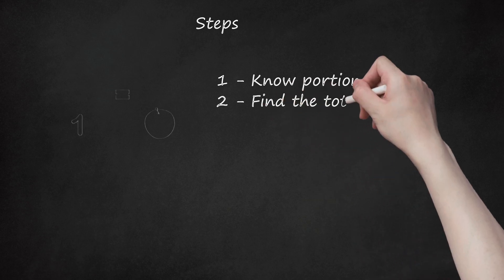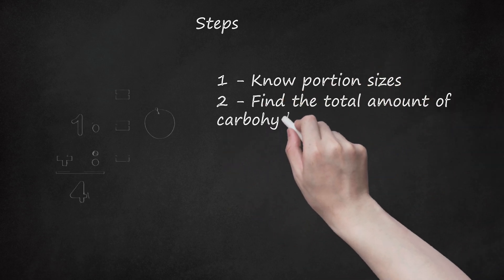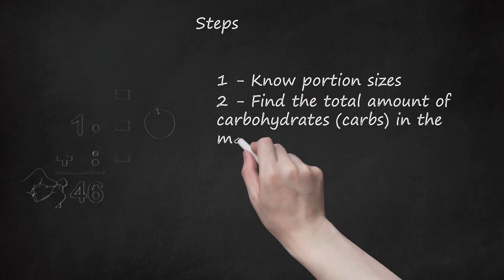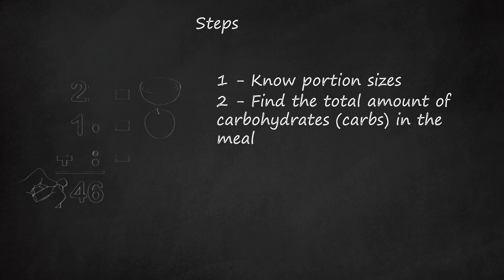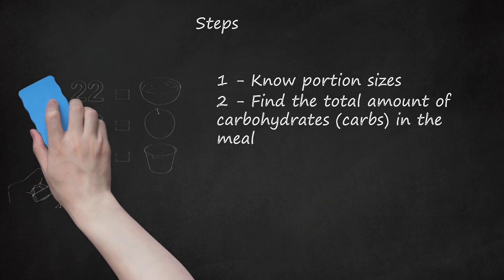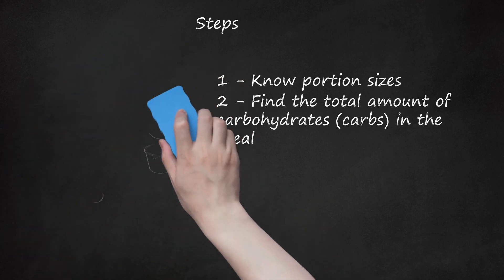Step 2: Find the total amount of carbohydrates (carbs) in the meal. Add the carbs of each item in the meal together. Example: The oatmeal has 22 carbs, the apple has 16 carbs, the yogurt has 8 carbs. 22 plus 16 plus 8 equals 46 total carbs in the meal.